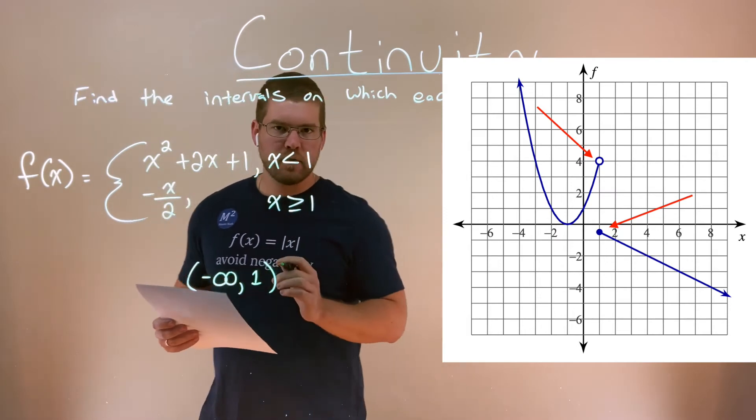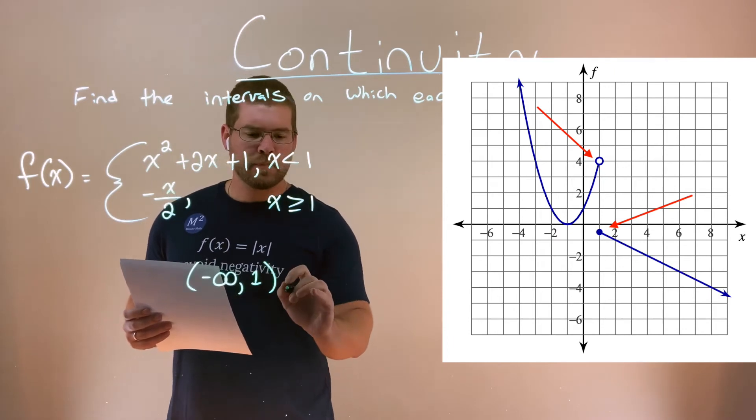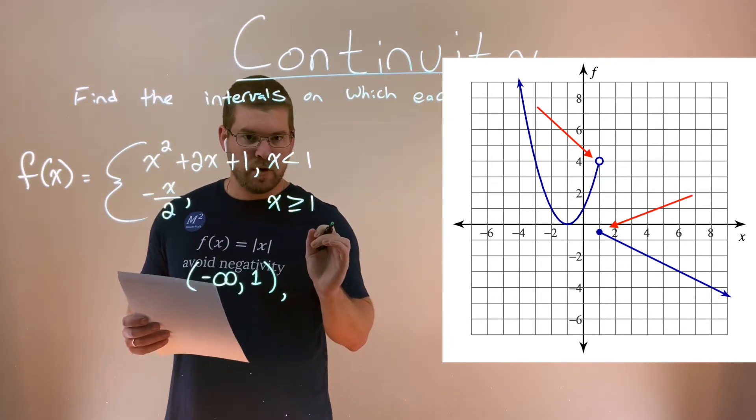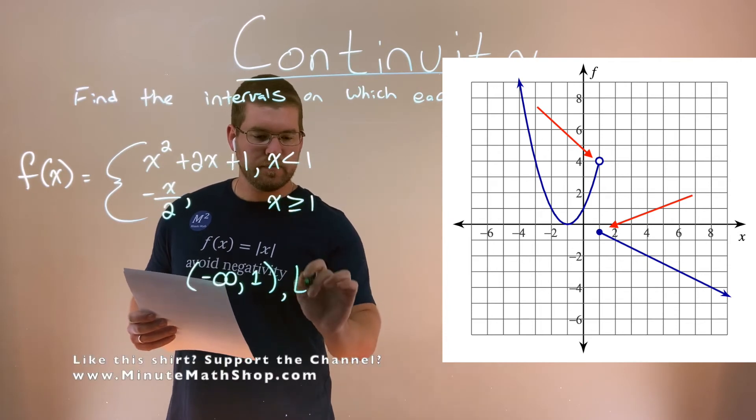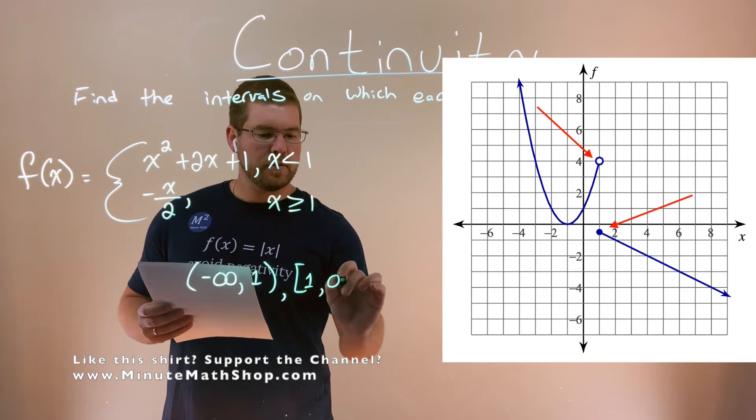Now, the second function, though, the second part here says it equals 1, and that's the straight linear line. Now, it's continuous there at that value of 1, where x is 1, all the way to positive infinity.